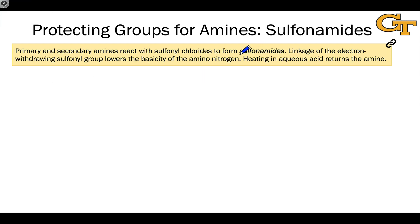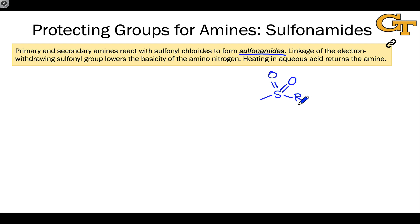Now let's look at two specific examples of protecting groups for amines. The first class is the sulfonamides. The sulfonyl group consists of sulfur linked to two oxygens — drawn as double bonds or as dipolar single bonds with O⁻ and S⁺ — and some kind of R group linked to the sulfur. This R group is sometimes electron-withdrawing to enhance the electron-withdrawing strength of the sulfonyl group, which fits our pattern of an atom more electronegative linked through a multiple bond.